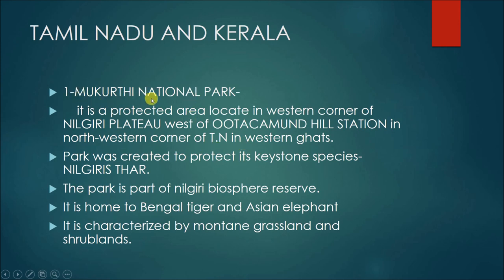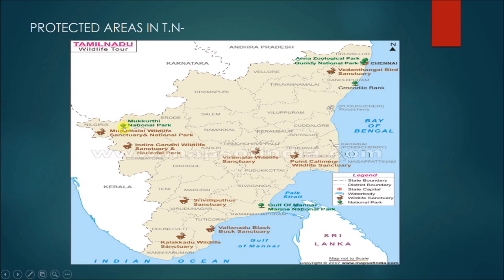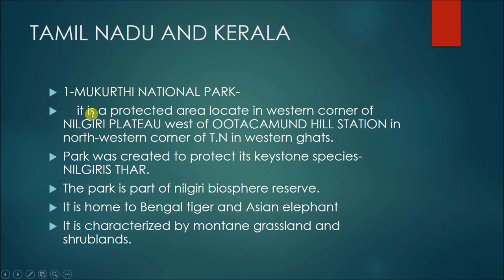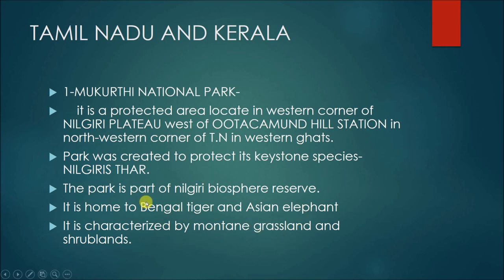Starting from Tamil Nadu and Kerala, the first one is Mukurti National Park. It is a protected area located in the western corner of the Nilgiri plateau, west of the Ooty hill station in the northwestern corner of Tamil Nadu in the Western Ghats. This park's most important keystone species is the Nilgiri tahr, and the park was created to protect this species. It is also home to Bengal tiger and Asian elephant.